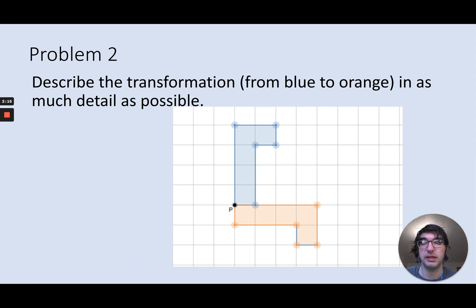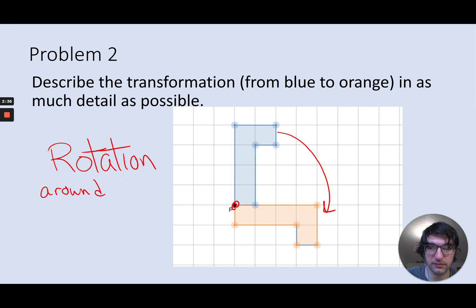So next one, let's check it out. From blue to orange, what do we have here? So we're going to have a rotation. So it looks like I'm pinning this point down and then spinning this thing. So I'm rotating around point P and I'm going clockwise, looks like a quarter turn, 90 degrees.